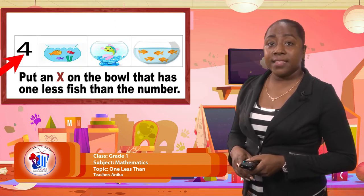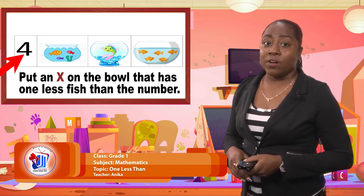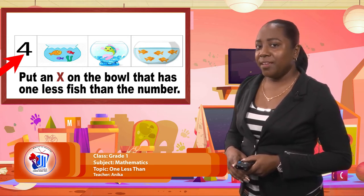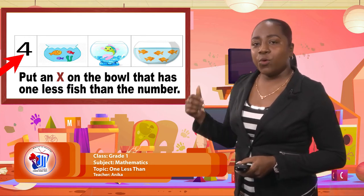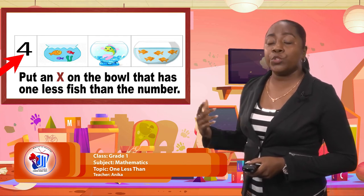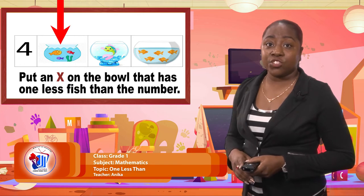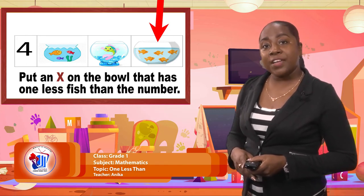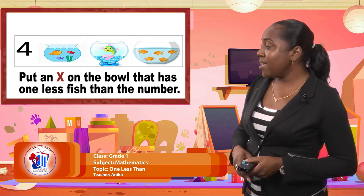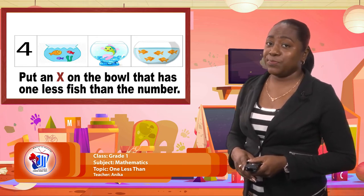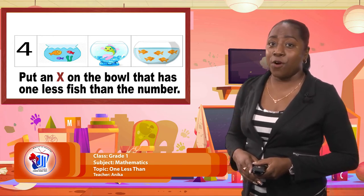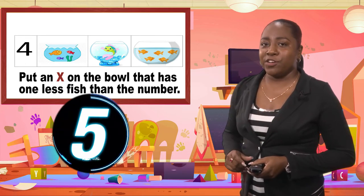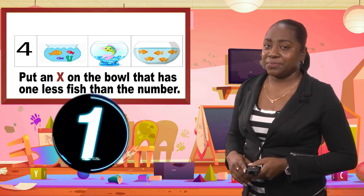On the screen you can see the number four. I would like you to put an X or identify the fish bowl that has one less fish than the number. So if we have the number four and we're looking for one less, which one would it be? The first jar that has three fishes? The middle jar with just one fish? Or the jar to the end with five fishes? Think about it and then I'll reveal the answer. One less than four — that's what you're looking for. You can also use your fingers: put up your four fingers, take one down and you'll find your answer.